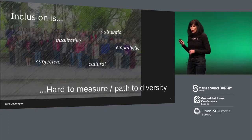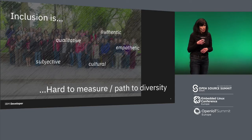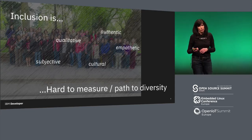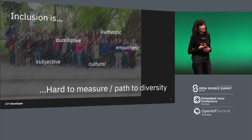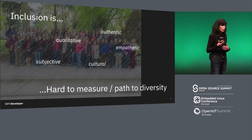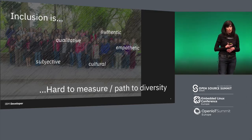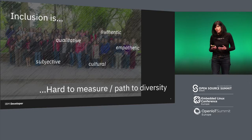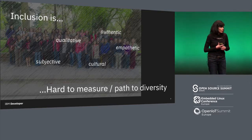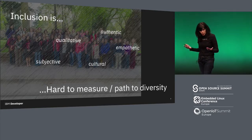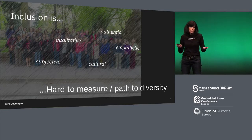While diversity is very easy to measure as a percentage, the way to get there is through inclusion, and this is hard to measure. These are the softer skills, the softer sciences. This is about having empathy, about being subjective, being authentically yourself. It's a culture thing, so it's very hard to measure. I want to give you some ideas about what we can do to improve the culture, which helps people feel more included, and then those diversity numbers will go up.